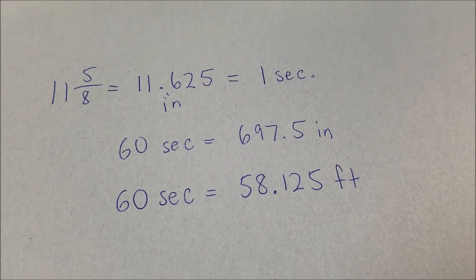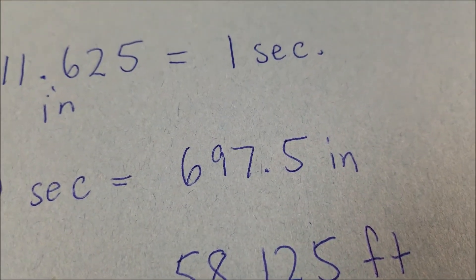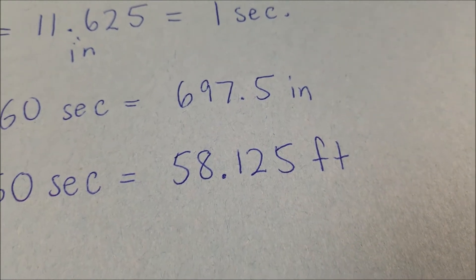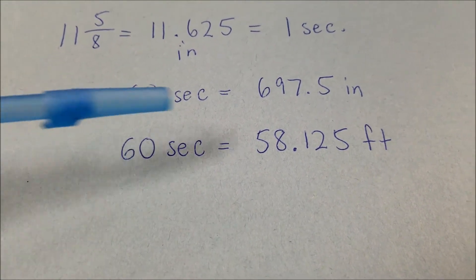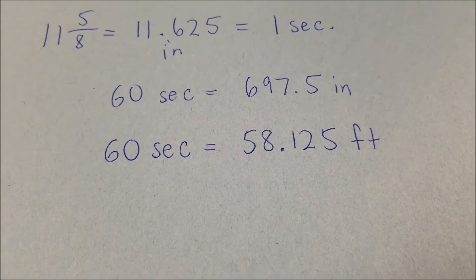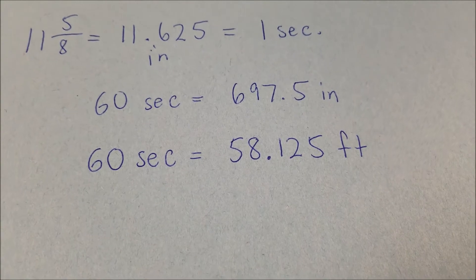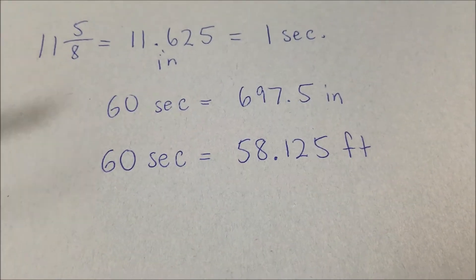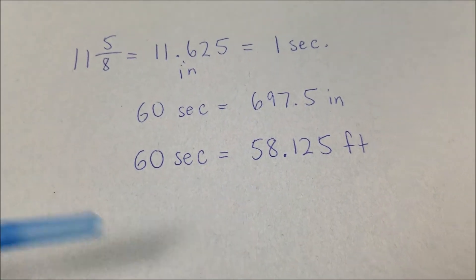Okay, I'm back again. So I divided the 697.5 inches by 12 and I got 58.125 feet. So in 60 seconds, it will travel 58.125 feet. Now what we want to do is multiply this 58.125 by 60 so we can get that hour. I'll be back.